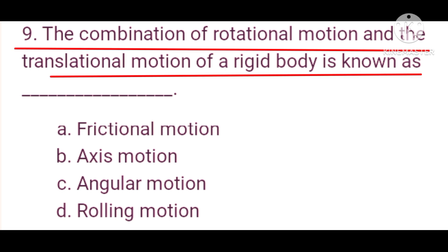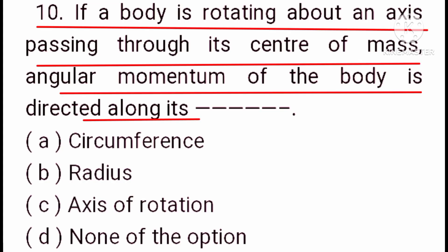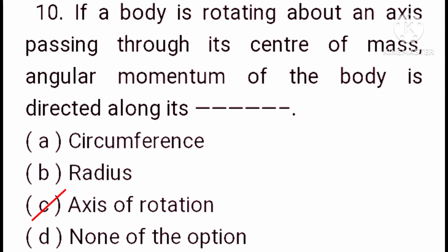Question number nine: the combination of translational motion and rotational motion of a rigid body is known as rolling motion. Option D is the correct answer. Question number ten: if a body is rotating about an axis passing through its center of mass, the angular momentum of the body is directed along its axis of rotation. Option C is the correct answer.